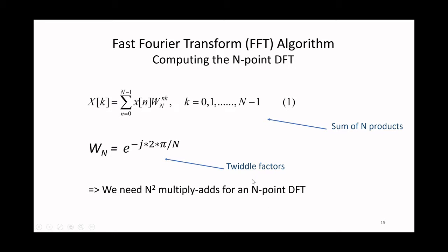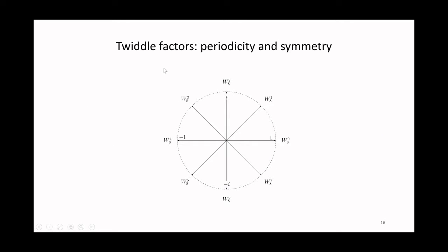Now the twiddle factors, it turns out, have some very special properties. They are periodic in the sense that for an eight-point DFT, the twiddle factors are shown here in the complex plane as the roots of unity. We have only eight unique values, and within those eight unique values is considerable symmetry in terms of the factors being related by complex conjugate symmetry or as positive-negative versions of each other.